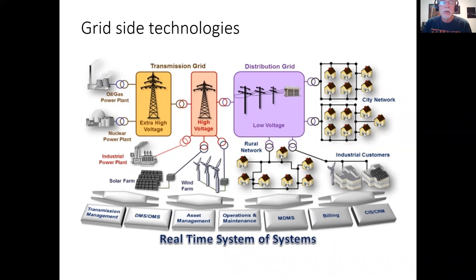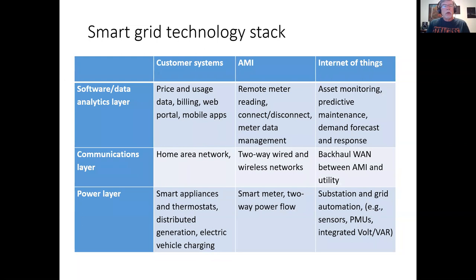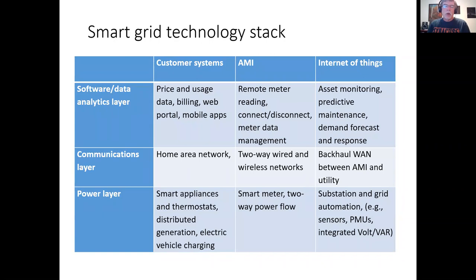The smart grid can be viewed as a technology stack. There's a physical power layer with devices; a communication layer including smart meters and two-way networks; and a software and data analytics layer that handles customer service, pricing, billing, mobile apps, meter reading, connect/disconnect, meter data management, predictive maintenance on grid assets, and demand forecasting and demand response.